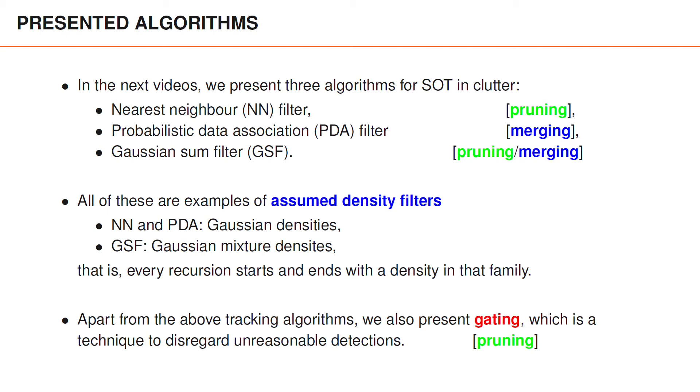Apart from these filters, we also present a technique called gating. The idea behind gating is that we typically know roughly where we may receive object measurements. A detection that appears far from that region is therefore very unlikely to be an object detection. Using gating, we disregard such unlikely measurements as clutter before starting the usual update step, which means that we can reduce the computational complexity, often by a considerable amount.